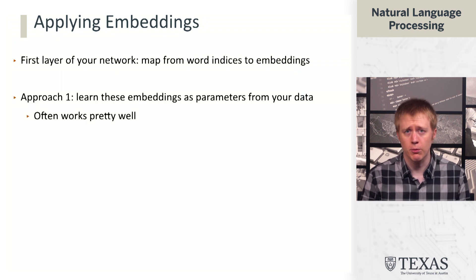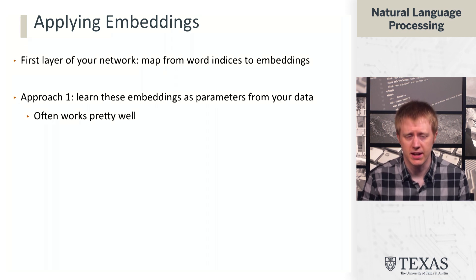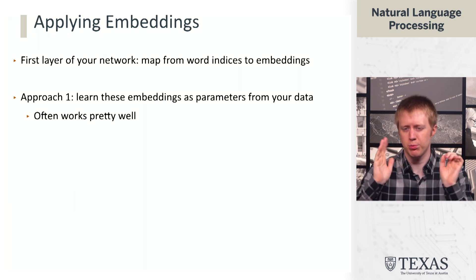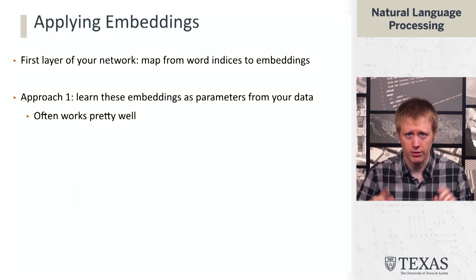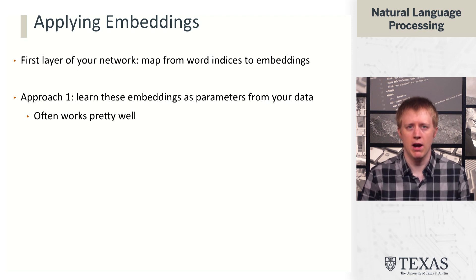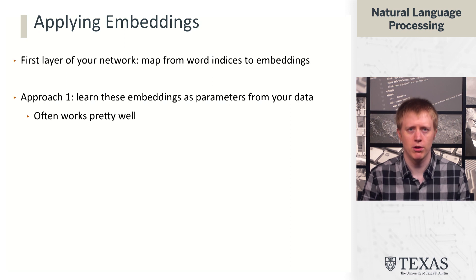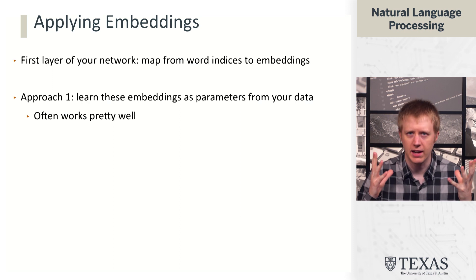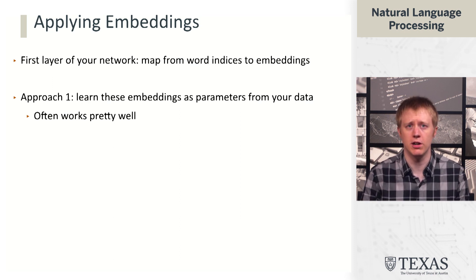There are a few different ways to do this. The first is that we learn these embeddings as parameters from our data, meaning we don't use any kind of pre-trained vectors learned over the web. Instead, we just randomly initialize all of them and learn them with backpropagation. This can actually work reasonably well. If you have enough data in your dataset, you can learn the important relationships between words purely from the data without needing to appeal to any external resource. Of course, it can't deal with words not seen in your training set.